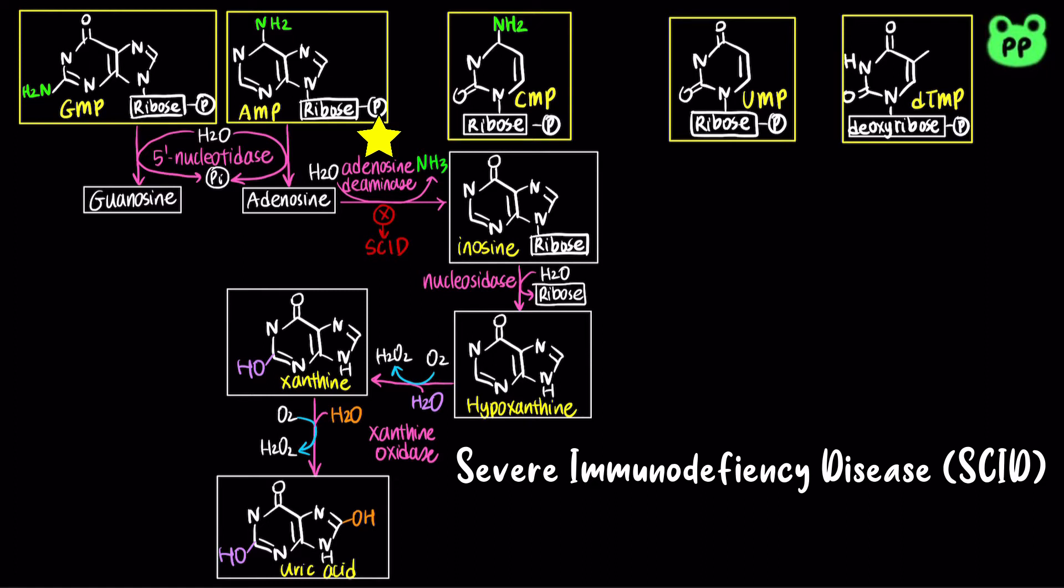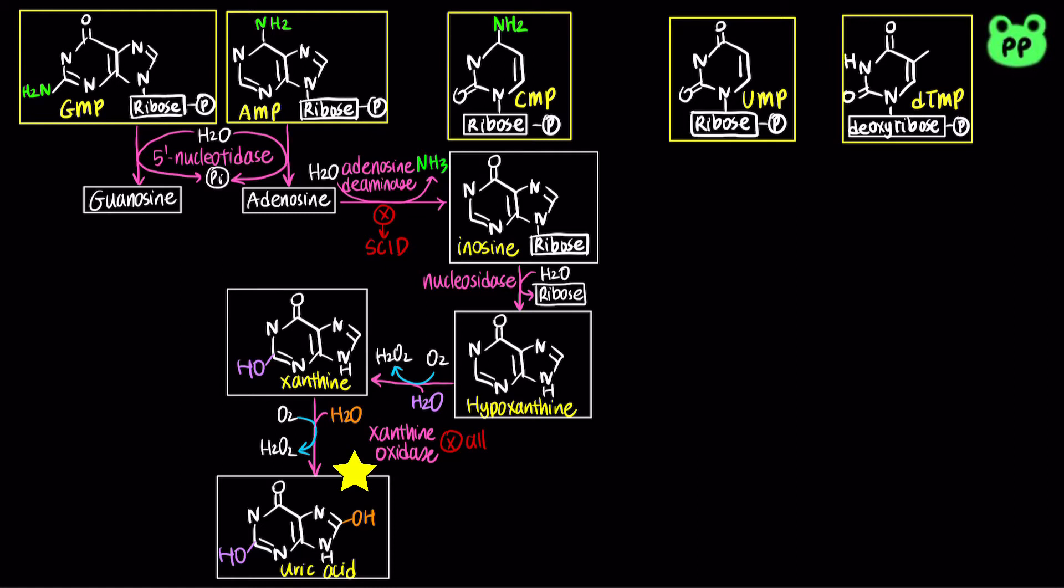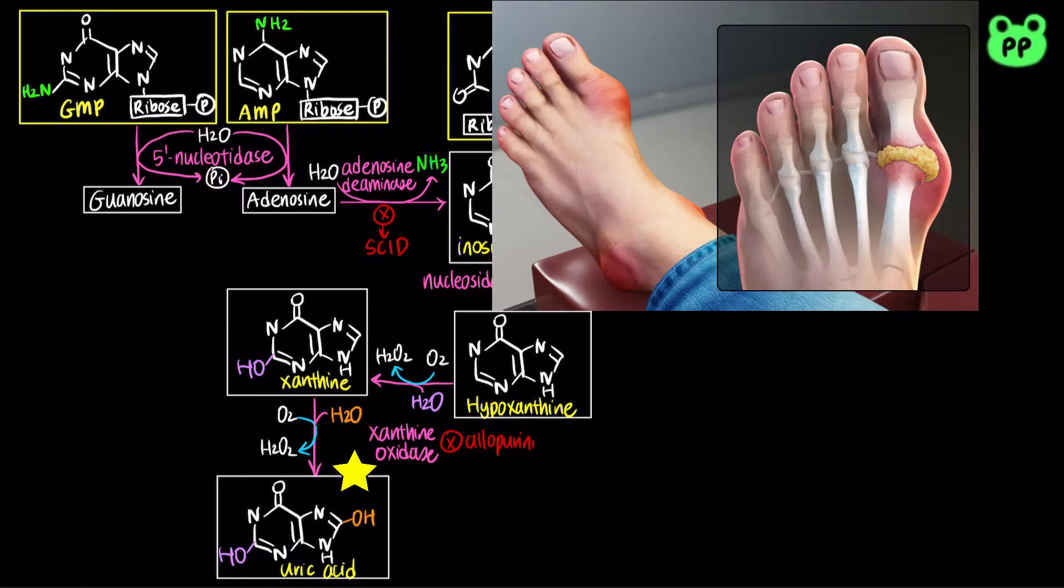High levels of uric acid in bloodstream would lead to gout, which causes joint inflammation as uric acid builds up in the joints as crystalline deposits.